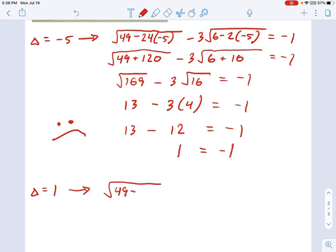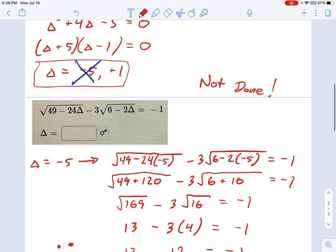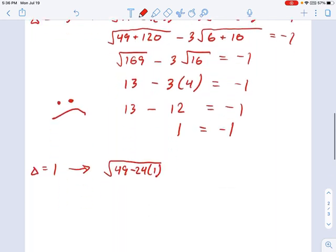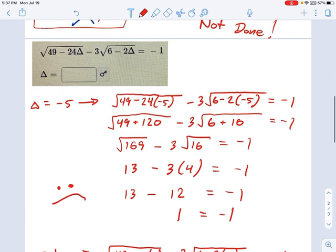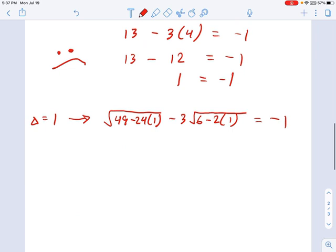It's going to be 49 minus 24 times 1. That was 1, right? Not negative 1. Where am I? Yes. Okay. And then it's minus 3, square root of 6 minus 2 times 1 equals negative 1. If you're wondering where those numbers were coming from, remember, I'm just taking this equation and plugging delta equals 1 in for every variable.